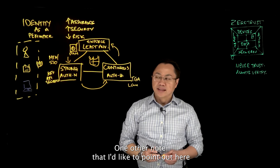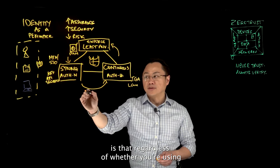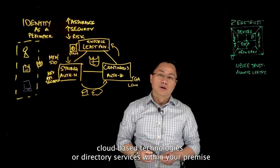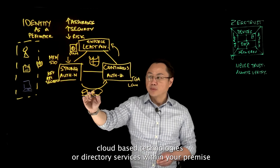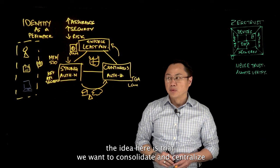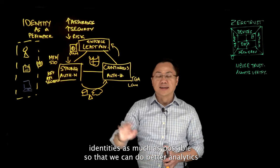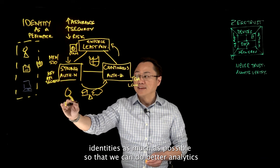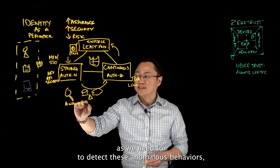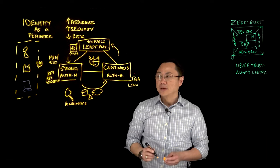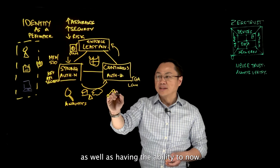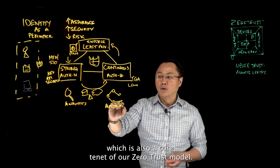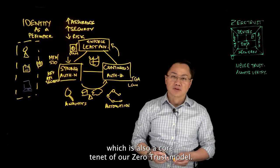One other note that I'd like to point out here is that regardless of whether you're using cloud-based technologies or directory services within your premise, the idea here is that we want to consolidate and centralize identities as much as possible so that we can do better analytics as we need to, to detect these anomalous behaviors, as well as having the ability to now do more workflow automation, which is also a core tenant of our zero trust model.